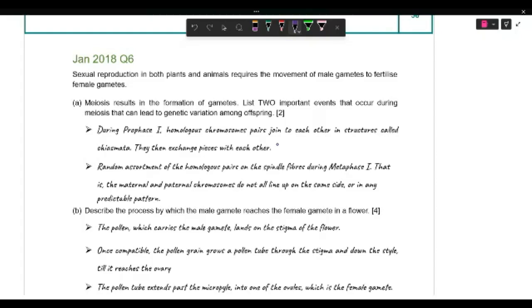We have prophase one, when the homologous pairs, they join each other and they exchange pieces with each other. And then the other events, when you have random assortment of the homologous pairs on the spindle fibers.